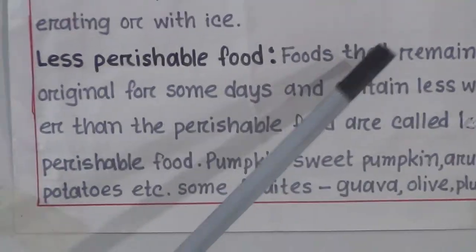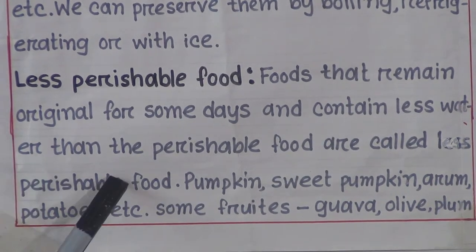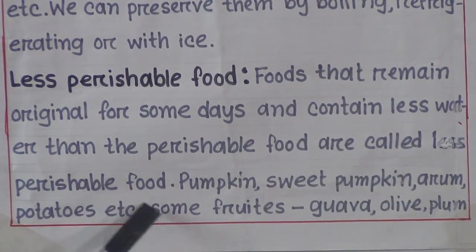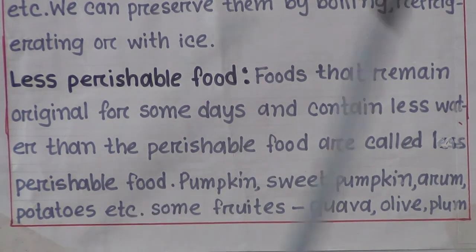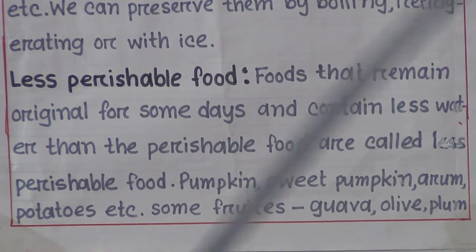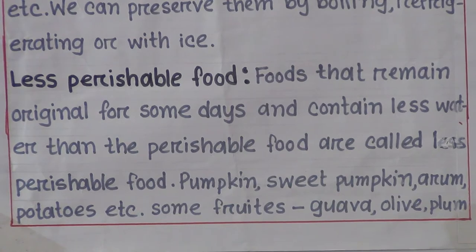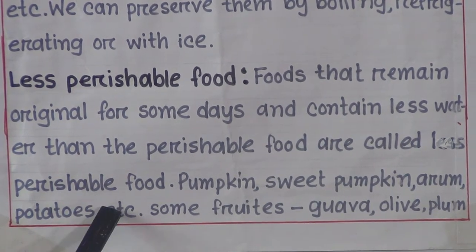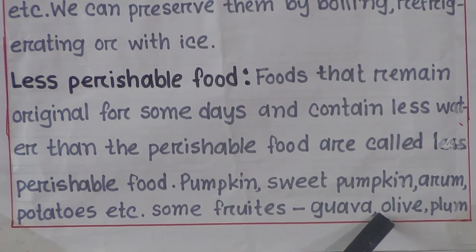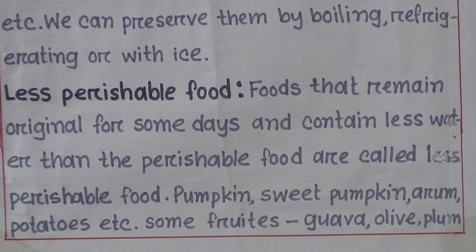Foods that remain original for some days and contain less water than perishable food are called less perishable food. For example: pumpkin, sweet pumpkin, potatoes, and some fruits like olive and palm. These are called less perishable food.